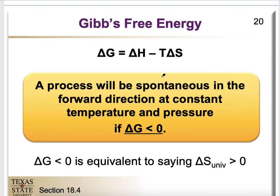We use Gibbs free energy to determine if a reaction is spontaneous. A process will be spontaneous in the forward direction at constant temperature and pressure if delta G is less than zero. We calculate the enthalpy and entropy change for the reaction, and if delta G is negative, the process is spontaneous. Having delta G less than zero is equivalent to saying the entropy change of the universe is greater than zero — both conditions describe a spontaneous reaction.